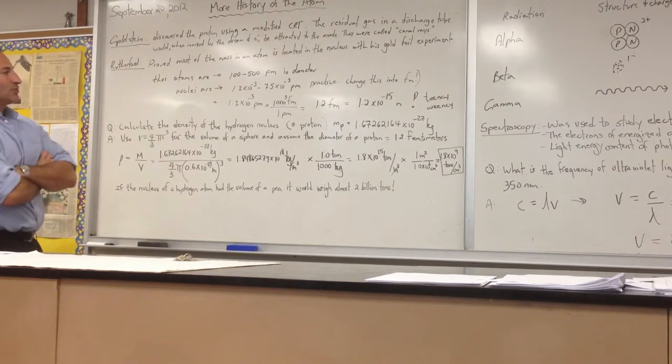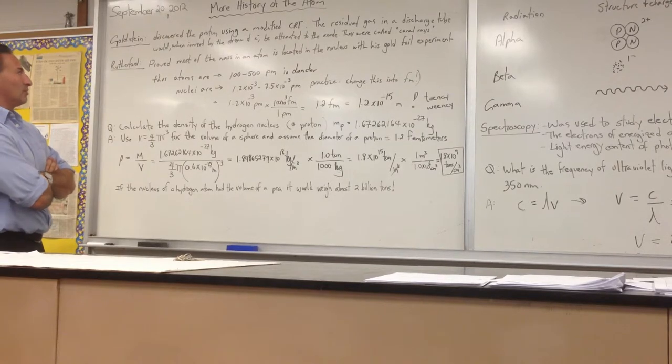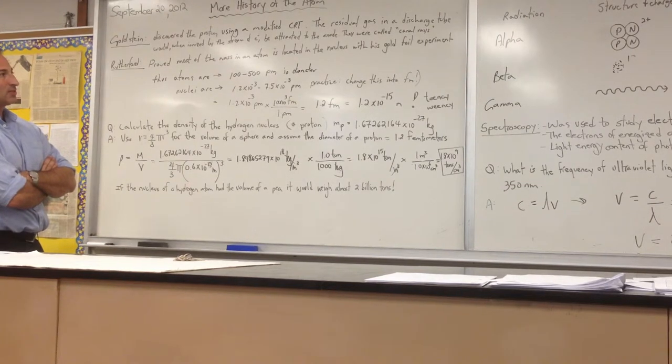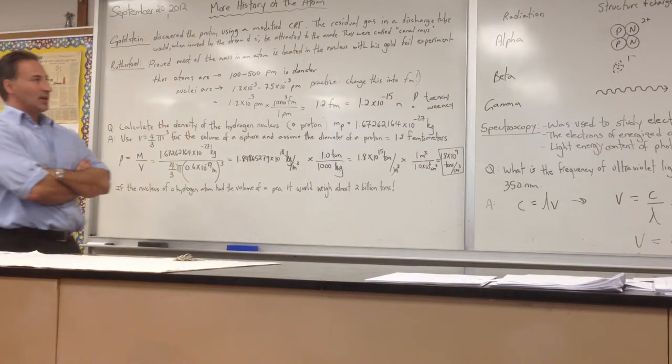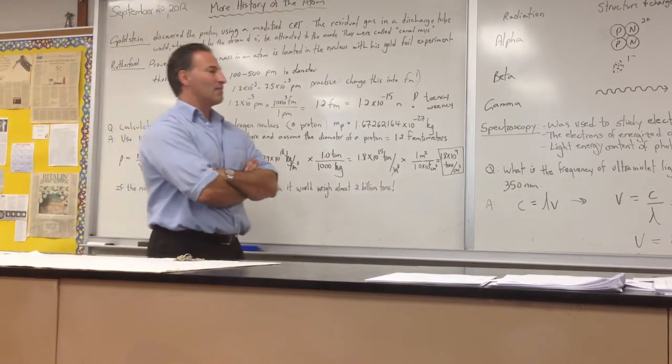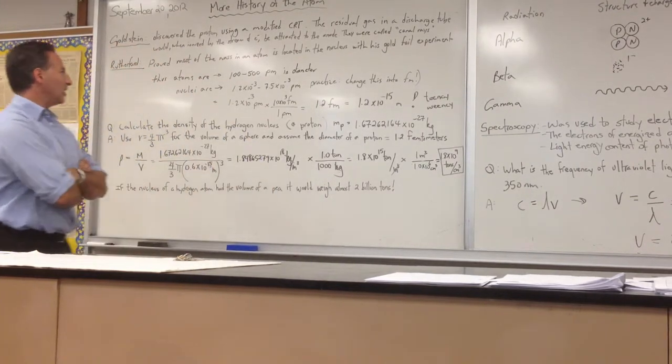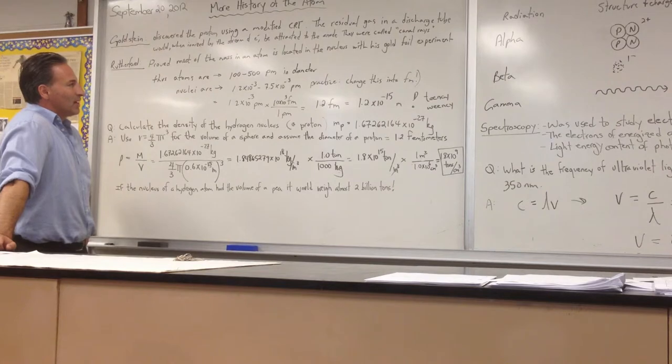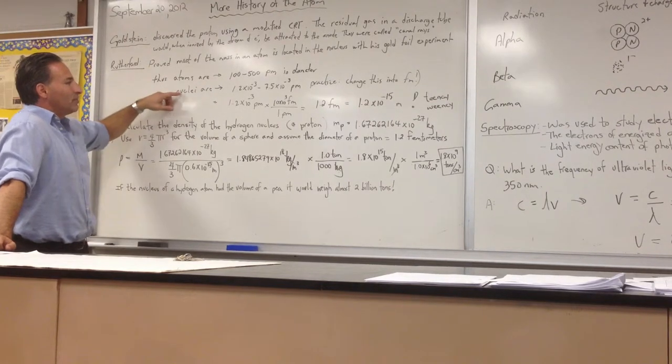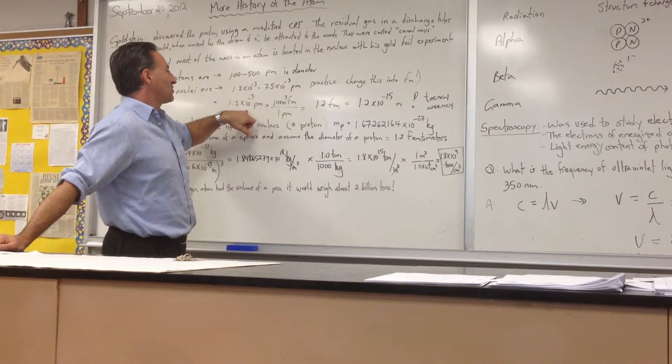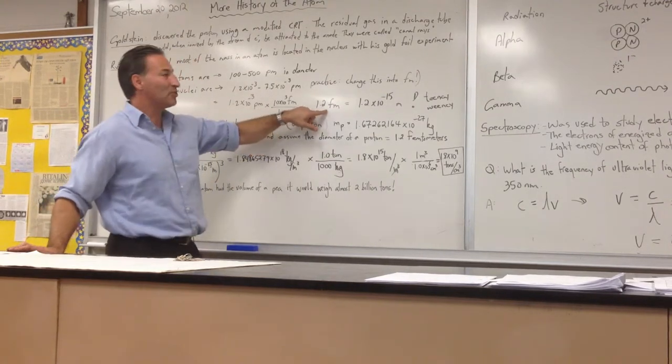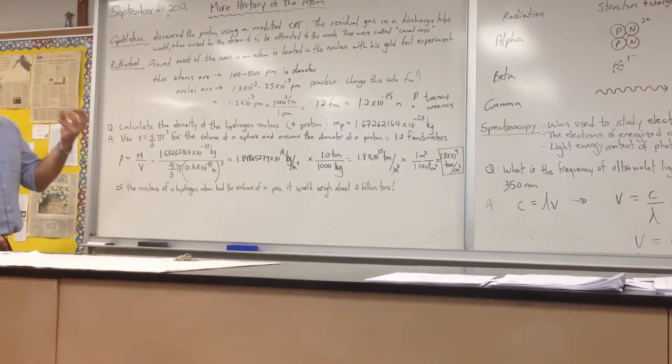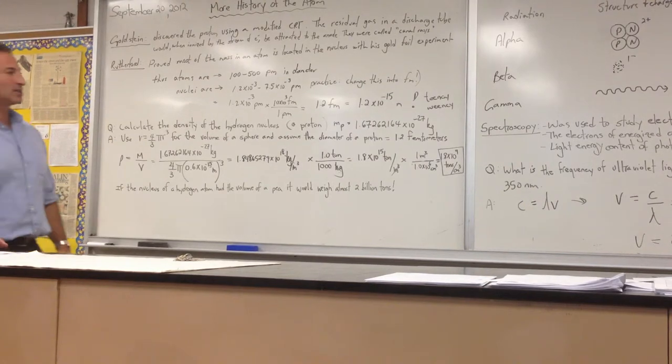There had to be an explanation for why such a heavy bullet, the alpha particle that was being emitted by this radioactive piece of metal, was bouncing off a super thin piece of gold foil. And the answer to it was that all the mass of the atom is concentrated in a very small nucleus. And they came to the conclusion that, although atoms are about 100 to 500 picometers in diameter, the nuclei are only about 1.2 times 10 to the minus 3 picometers, or 1.2 femtometers in diameter. Very small indeed. And all of the mass of the atom, almost all of the mass of the atom is concentrated in that small nucleus.